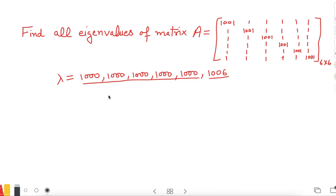That means its algebraic multiplicity is five and the algebraic multiplicity of 1006 is one. So how do we know that matrix A will have these as the eigenvalues? The formula for such questions is very straightforward.